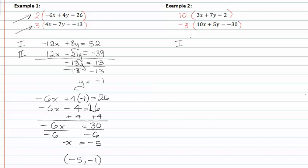The first equation, once the ten is distributed, gives me 30x + 70y = 20. In the second equation, I have -30x - 15y = 90. Adding the two equations together, our x terms add to zero, 70 minus 15 is 55y, and 20 plus 90 gives me 110.